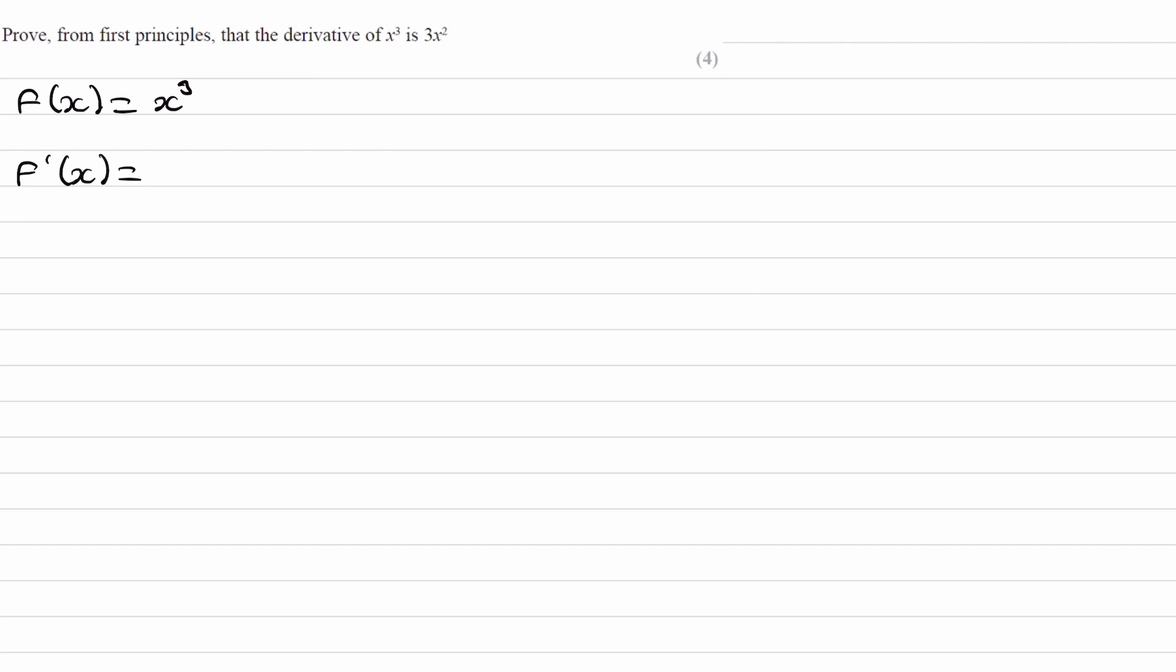The equation to differentiate from first principles is this: it's the limit as h goes to 0 of f of x plus h minus f of x, all divided by h.